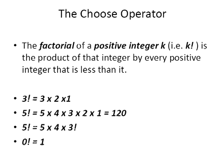One more important point: zero factorial is equal to 1. A lot of people would intuitively think it should equal zero, but it is actually equal to 1, and that's important to remember when doing these types of calculations.